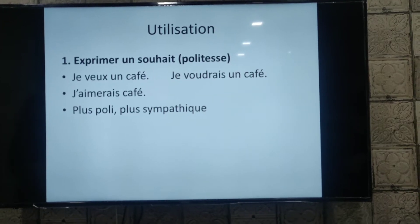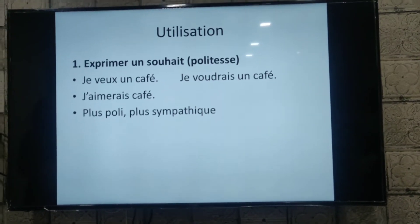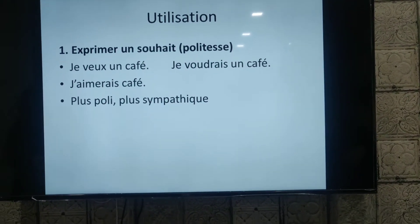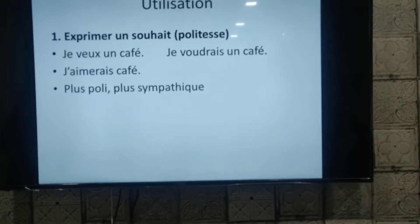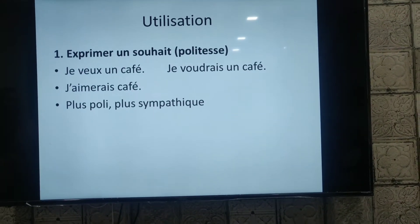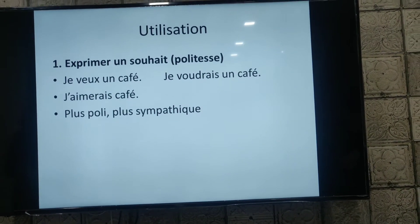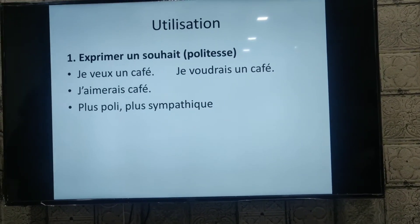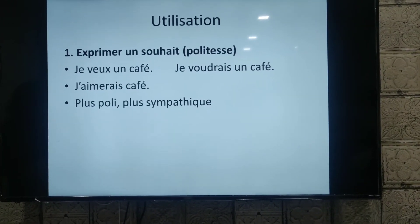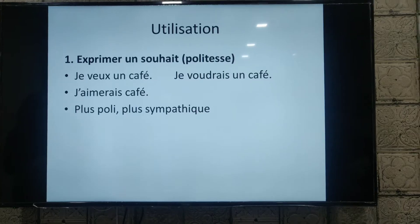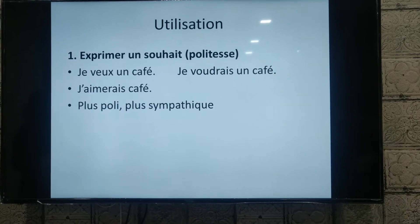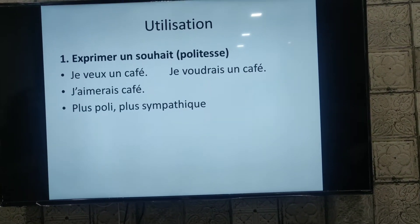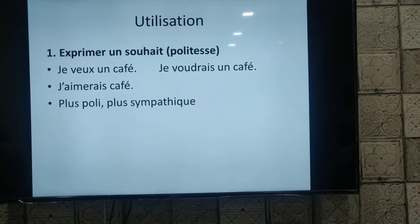Now coming to the use of this tense. The first use is to express a wish politely — to say something politely — exprimer un souhait avec la politesse. For example, je veux un café means 'I want a coffee,' but a more polite way would be je voudrais un café or j'aimerais un café.